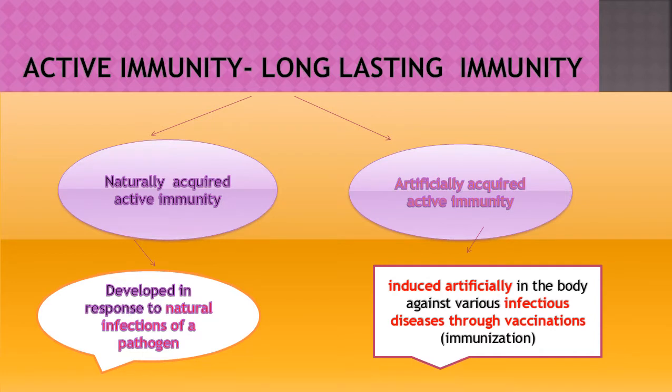Active immunity is long-lasting — it can last throughout your life because memory cells have already been produced in your body. This can be divided into naturally acquired active immunity and artificially acquired active immunity. Naturally acquired active immunity is developed in response to natural infections by a pathogen.